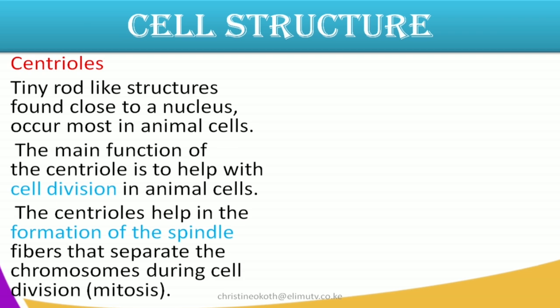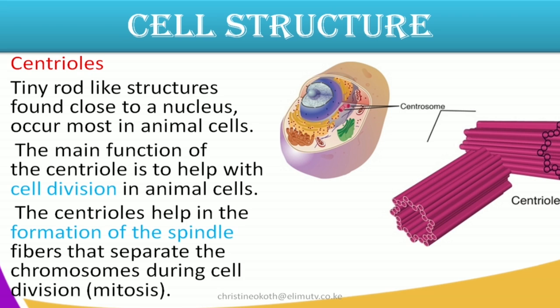The final cell structure we have is what we call the centrioles. These are tiny rod-like structures found close to the nucleus and they occur mostly in animals. Looking at our illustration, you can see the centrioles — they are very close to the nucleus. The main function of the centrioles is to help with cell division in animals. In cell division, they help in the formation of the spindle fibers that separate the chromosomes during cell division.